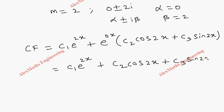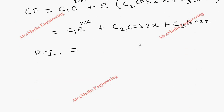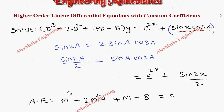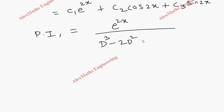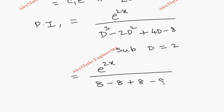Coming to particular integral 1, the first term we have is e power 2x. So PI1 equals e power 2x divided by d cubed minus 2d squared plus 4d minus 8. We substitute d equals 2: the denominator becomes 2 cubed which is 8, minus 2 times 2 squared which is 8, plus 4 times 2 which is 8, minus 8.